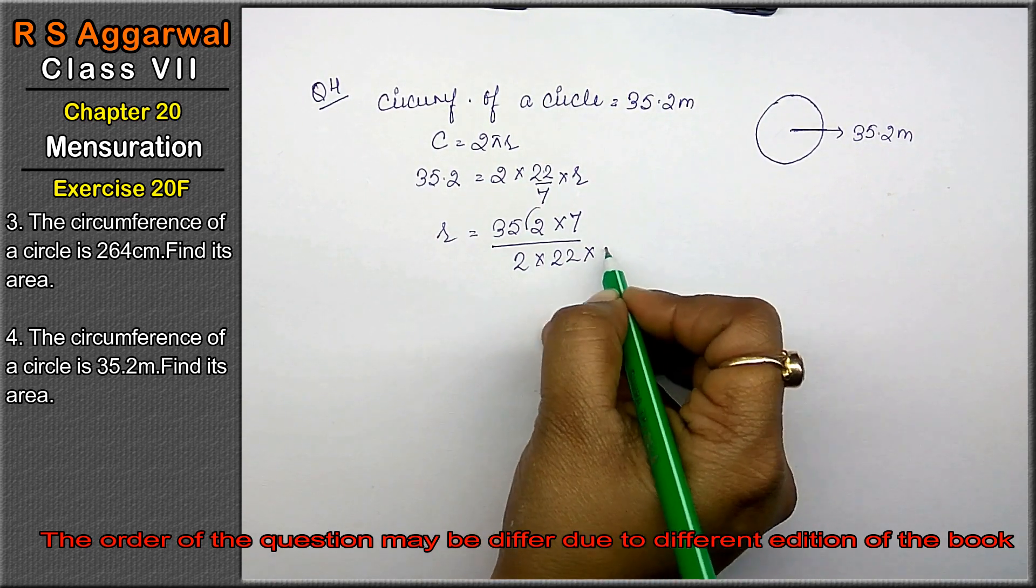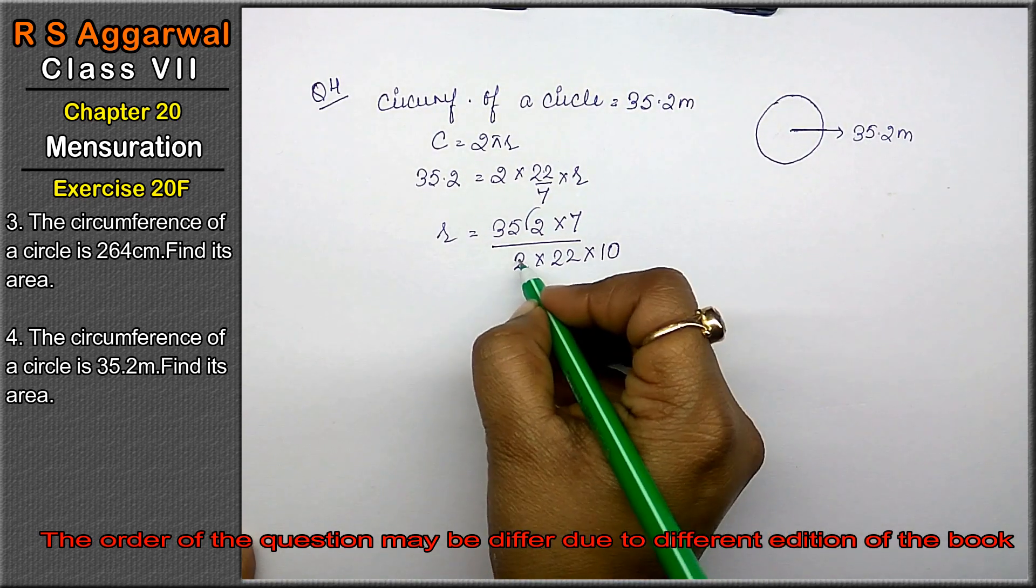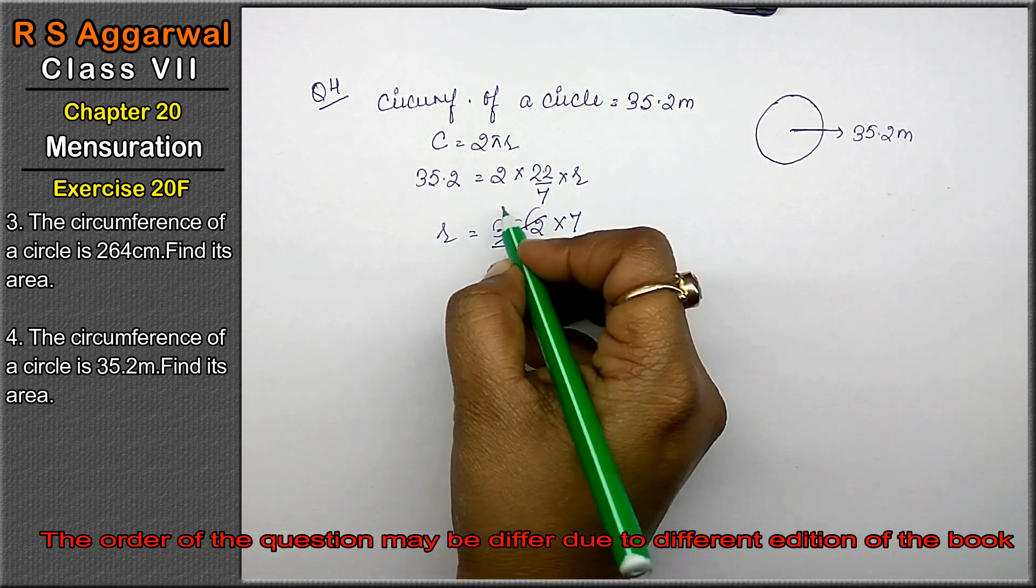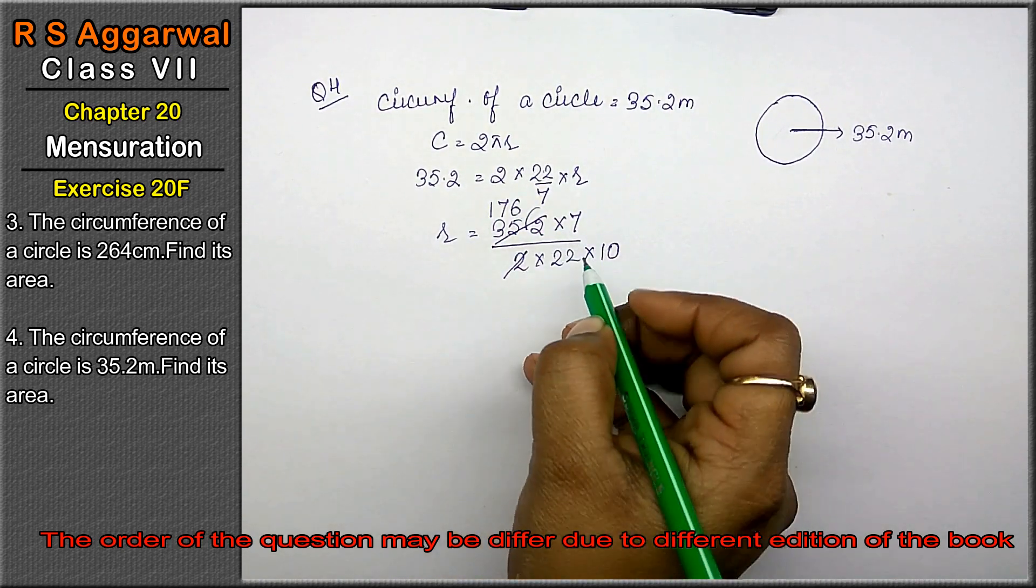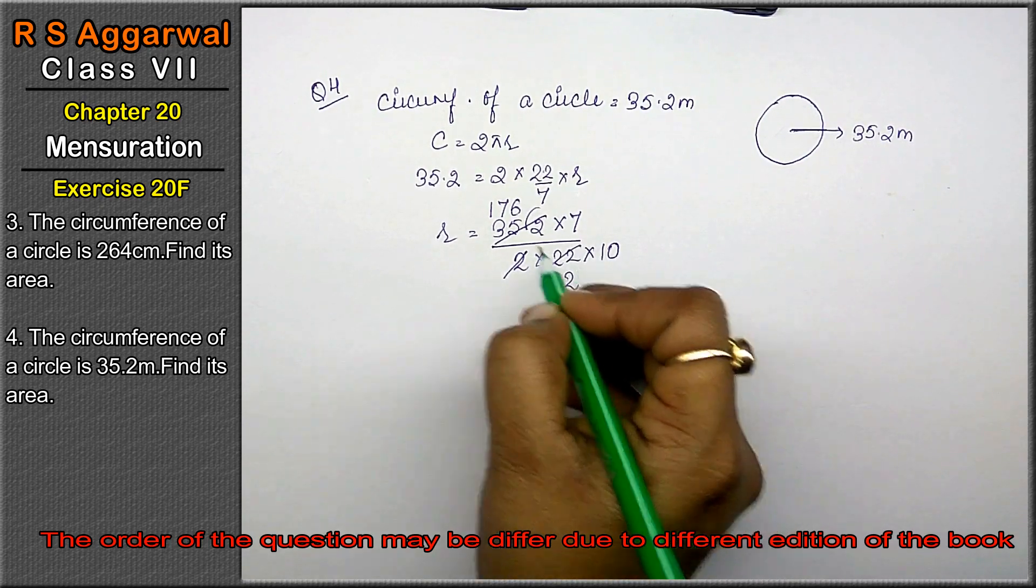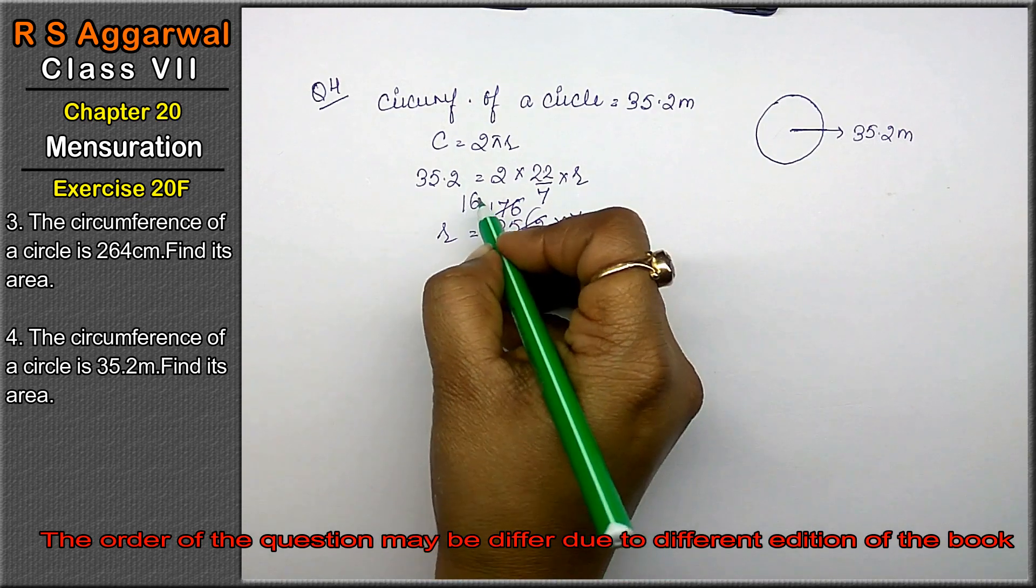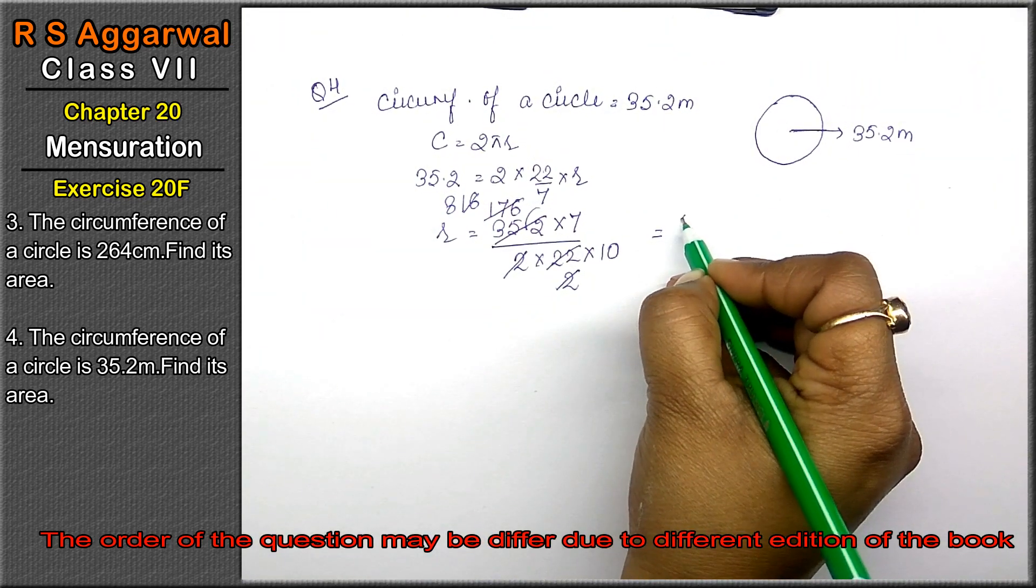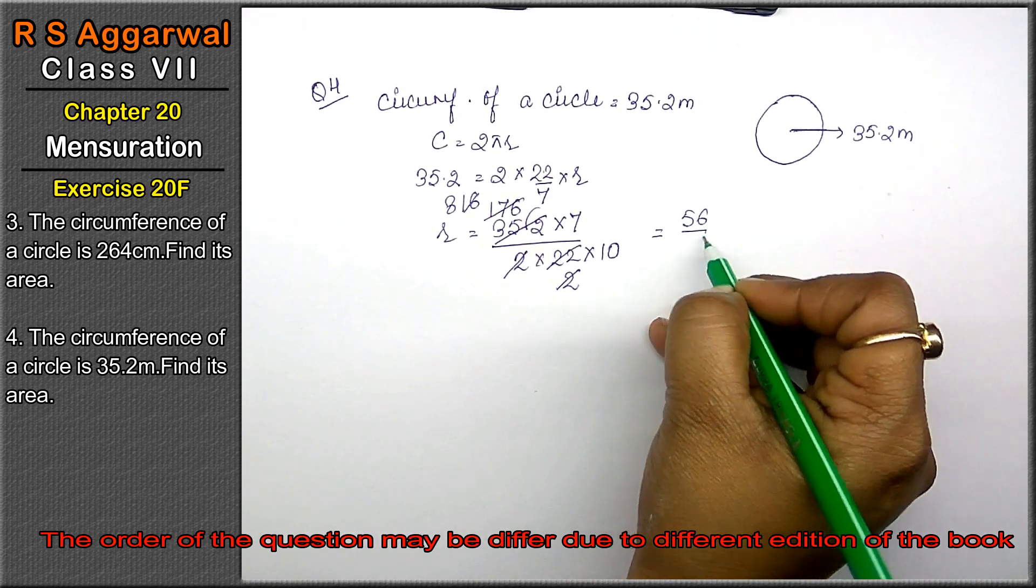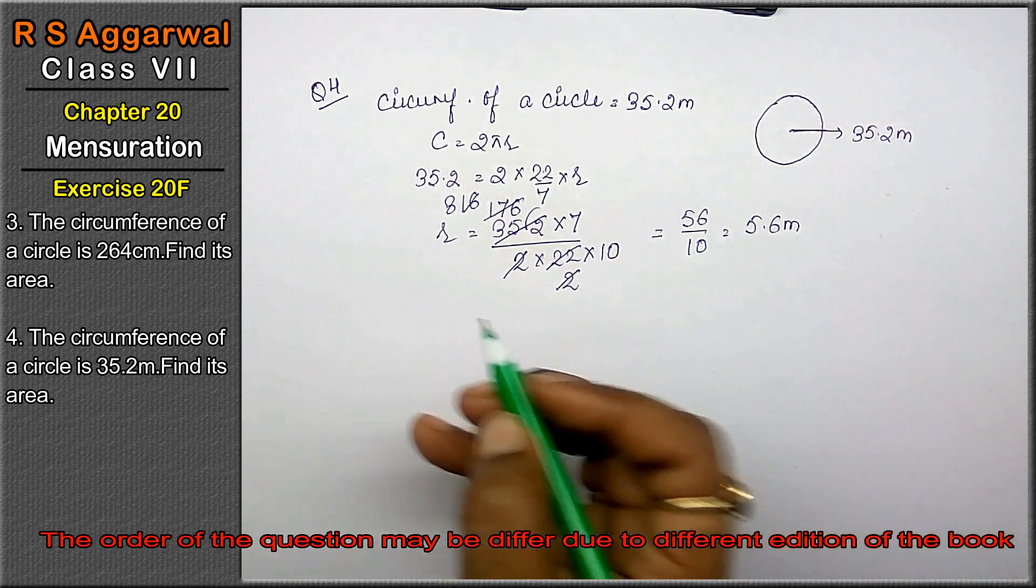Point hata ya. Ek ke baad point tha to ek zero niche lag gai. Now 2 ones are 2. 2 ones are 2. 2 sevens are 14. 2 sixs are 12. Now 11 twos are 22. 11 ones are 11. 11 sixs are 66. 2 ones are 2. 2 eights are 16. Now 5 sevens are 8 sevens is 56 upon 10. Toh ek ke baad point lag gya. That means 5.6 meter is the radius.